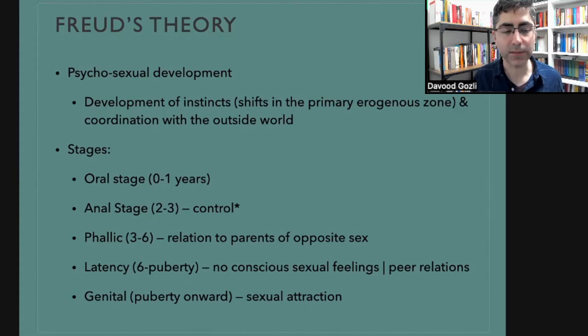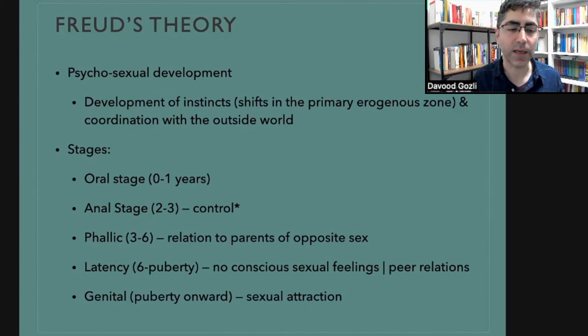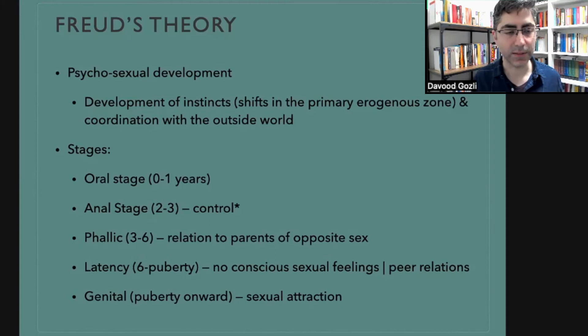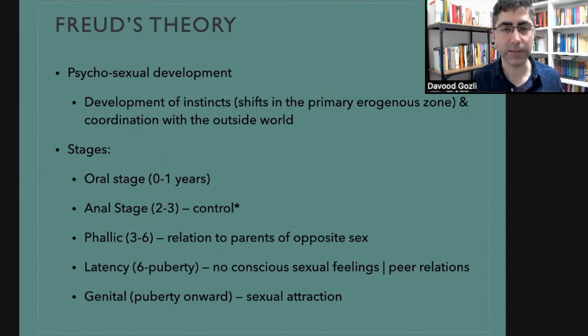The anal stage — the second stage — is not just about focusing on one erogenous zone; it also has a theme, namely control. In the phallic stage, the third stage, it is about the relation between the child and the parents of the opposite sex. In the latency period, the theme is the relationship between the child and peers of the same age, with no conscious sexual feeling. Finally, in the genital period, it is about relationship with a romantic partner or potential romantic partner.